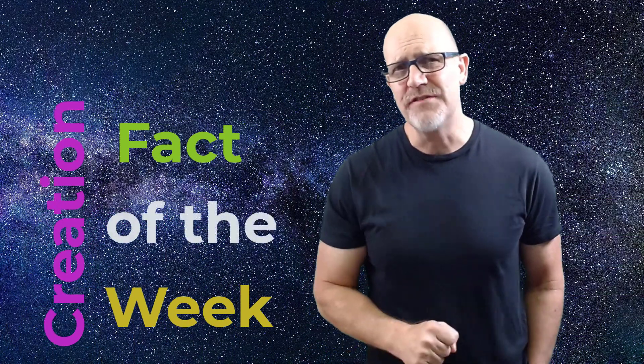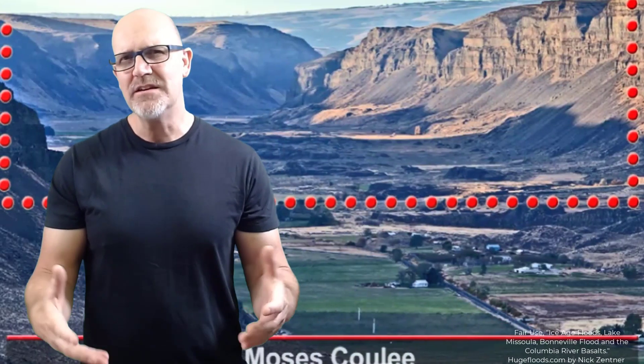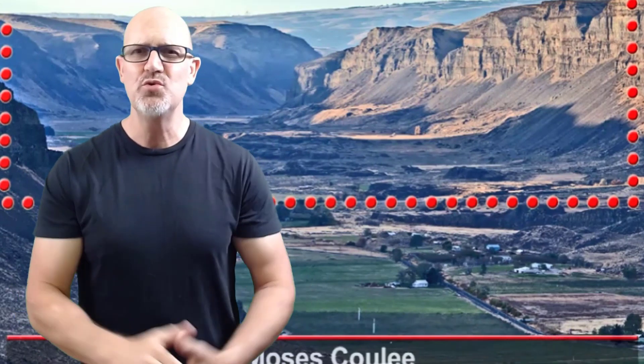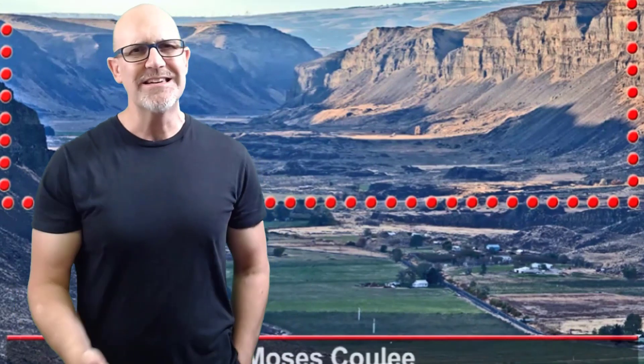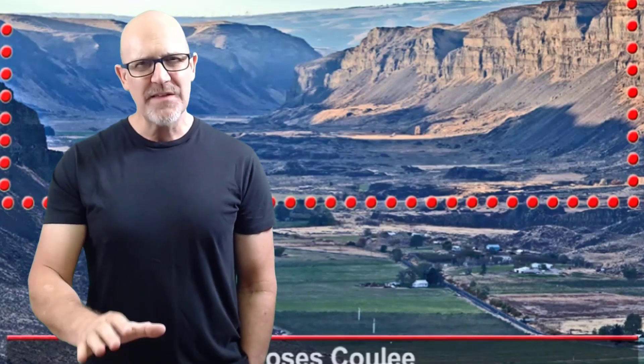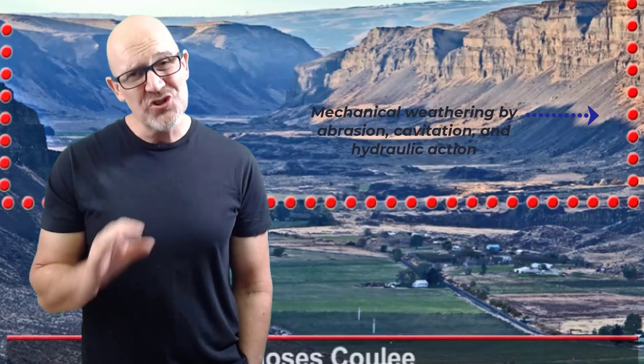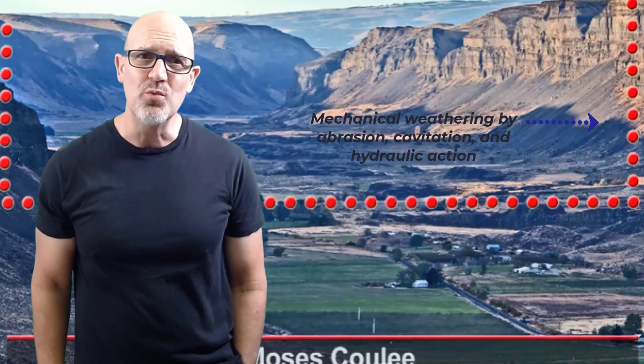It's time now for our creation fact of the week. Did you know that weathering and erosion can occur at astonishing rates? Remember, weathering is defined as the breaking down of parent rock. Don't get sidetracked into thinking that weathering is always a slow process. This huge canyon in Idaho, for example, was weathered and eroded in just a few weeks when an ice age lake catastrophically burst its banks. Keep in mind that this local flood cut through several hundred feet of solid basalt, all in just a few weeks.